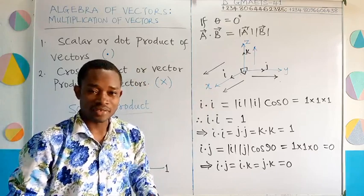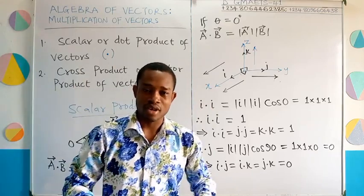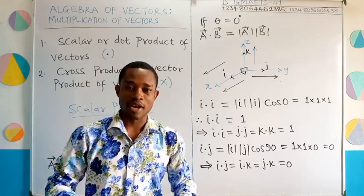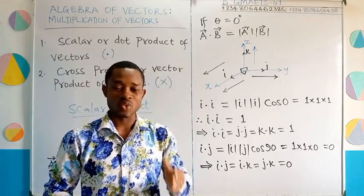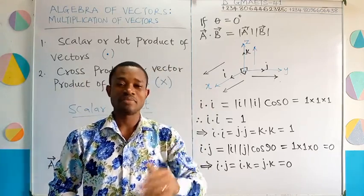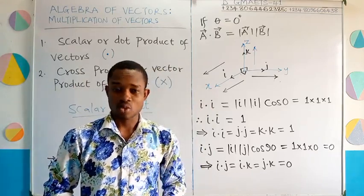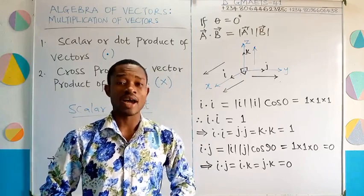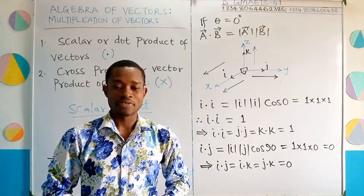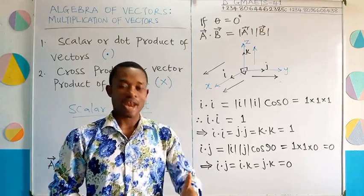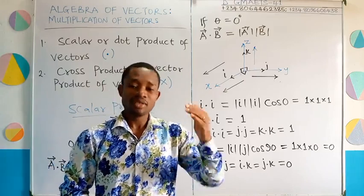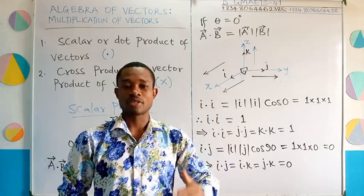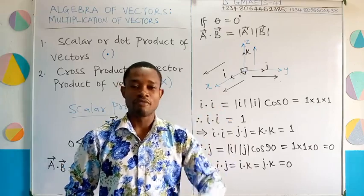We are going to take this method of multiplying vectors one at a time. First, we shall start with the scalar method — the scalar product, the dot product of vectors.